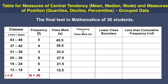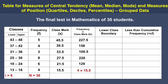Now complete the next column — frequency times class mark, or fx. First: 5 times 45.5 equals 227.5. Next: 4 times 39.5 equals 158. Next: 3 times 33.5 equals 100.5. Next: 8 times 27.5 equals 220. Next: 6 times 21.5 equals 129. Last: 4 times 15.5 equals 62. Add the fx column — that equals 897.